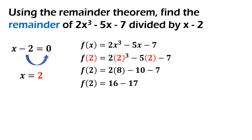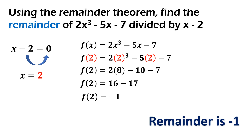Paano nakuha yung 16 minus 7? 2 times 8, that's 16. And then, negative 10 minus 7 — same sign sila — add the number, copy the sign, kaya nakuha yung negative 17. So, 16 minus 17 is equal to negative 1. Ang remainder natin is negative 1.